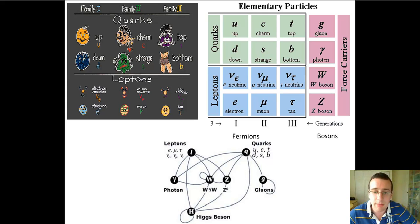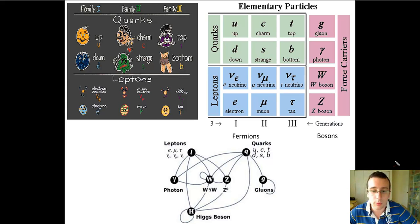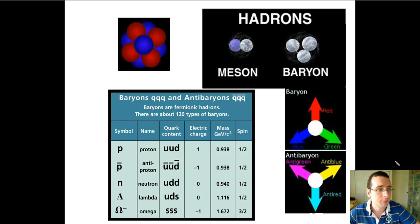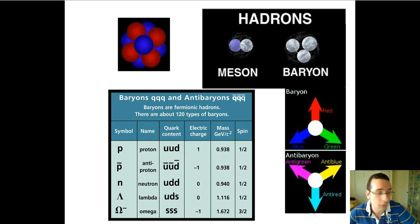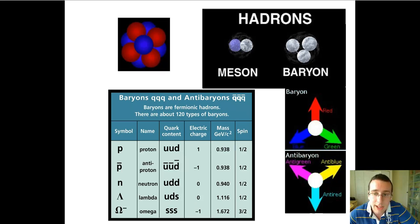These elementary particles can actually connect with each other to form what we call composite particles, or hadrons. Hadrons are like big pieces built of these small pieces, and you know some of these hadrons — for example, the proton and the neutron. You've probably heard about those before, and basically they're made of those quarks, or fermions, those tiny little particles which make them up.